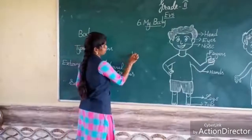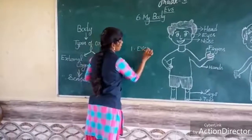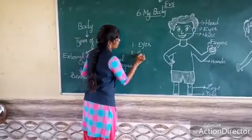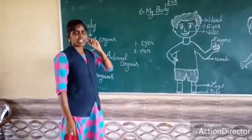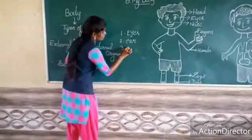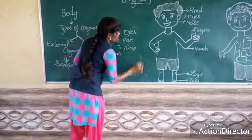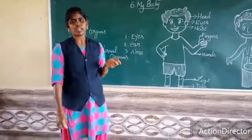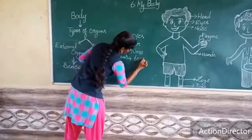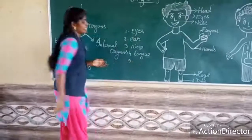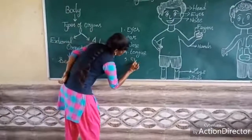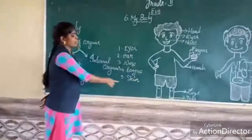First one is eyes — eyes for seeing. Second one is ear — ear for hearing the sounds. Third one is nose — nose for smelling. Fourth one is tongue — tongue for taste. And fifth one is skin — skin for feel.